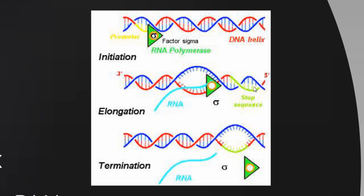Then you reach the stop sequence, which tells the RNA polymerase it's time to fall off. It's going to go find another promoter and repeat this process over and over again — it can copy any kind of gene, it's just looking for a promoter region. The messenger RNA has been formed and will go on to the next step.